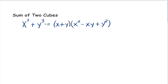Factoring is just going in reverse, going backwards. If we have an expression that's written as something cubed plus something else cubed, then we automatically know that it has to factor into a binomial x plus y times this trinomial x squared minus xy plus y squared.